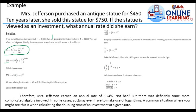So if we multiply by 100%, therefore, Mrs. Jefferson earned an annual rate of 5.24%. Not bad. That means she earned 5.24% on her investment from $450 to $750. So that's how we compute the interest rate of our investment.